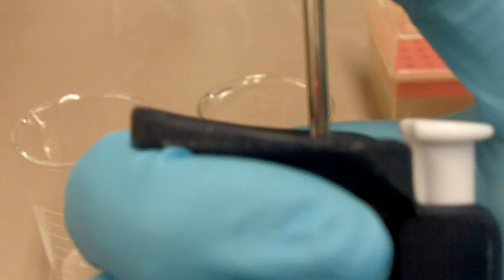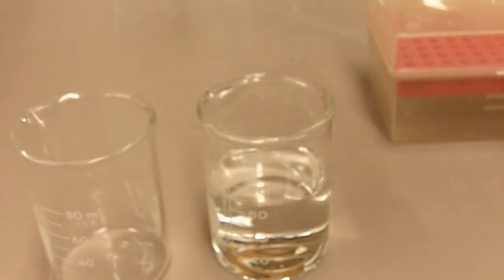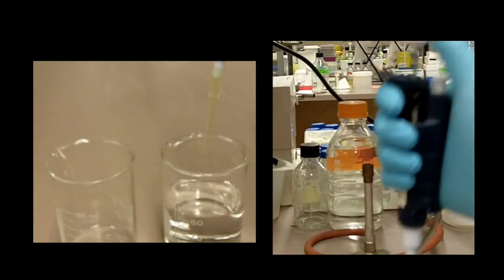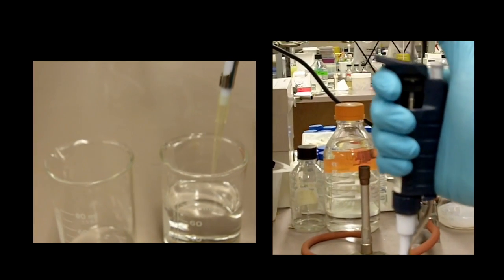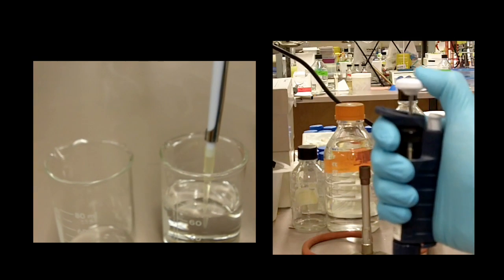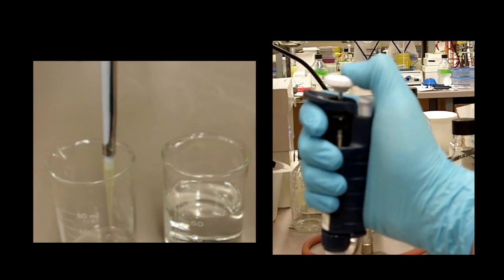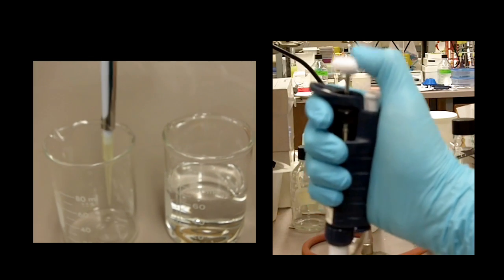So again, when you withdraw solution, you go to the first stop and you stop. When you expel the solution, you go to the second stop. So you press it to the first stop first, insert the tip into the solution, release the plunger, and then when you expel, you go to the first stop and then go to the second stop to expel everything.